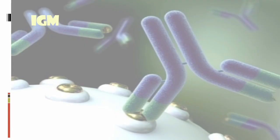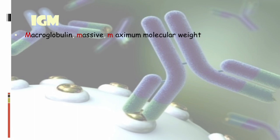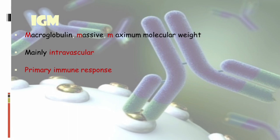Next comes IgM. Remember it has 'M' for macroglobulin — it is massive in size and has the maximum molecular weight. It is mainly intravascular and provides the primary immune response. IgG provides secondary immune response and IgM provides primary immune response. For example, in hepatitis, if it is an acute infection we go for IgM, and if it is chronic we go for IgG.